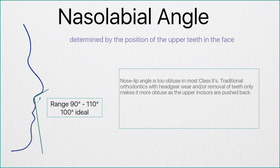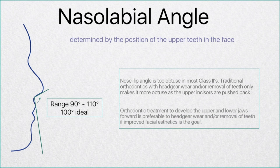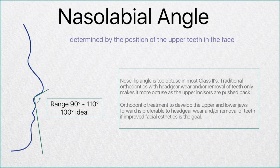The nose lift angle is almost always too obtuse in Class II patients. Traditional orthodontics with a headgear or removal of teeth and retraction makes the number, which is already too large, even larger. What this means is that orthotic treatment to develop the upper and lower jaws forward is preferable to headgear wear and/or removal of teeth if improved facial aesthetics is the goal, and certainly if we are wanting to optimize the airway for our patients.